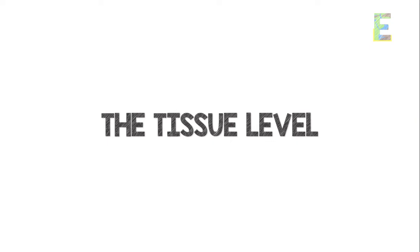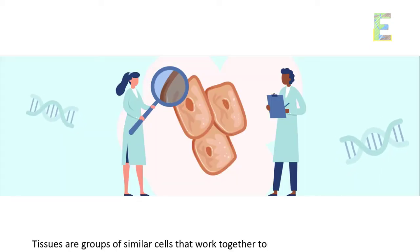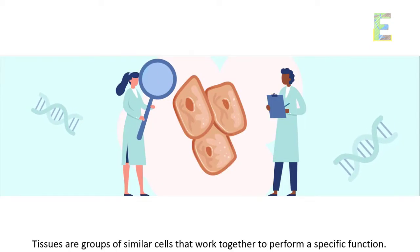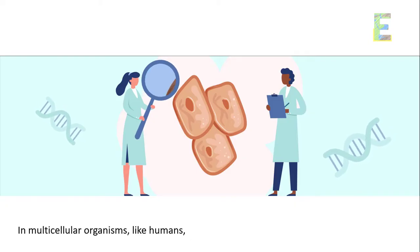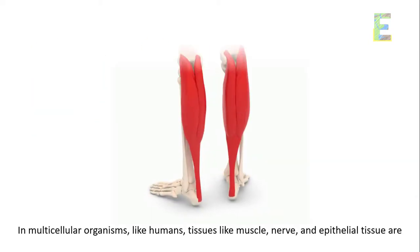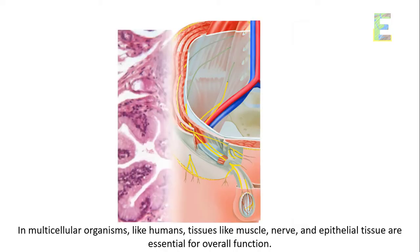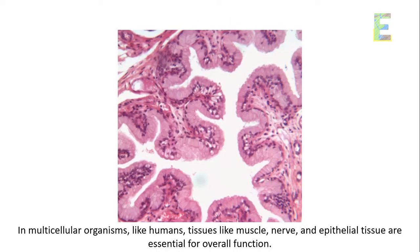The tissue level. Tissues are groups of similar cells that work together to perform a specific function. In multicellular organisms, like humans, tissues like muscle, nerve, and epithelial tissue are essential for overall function.